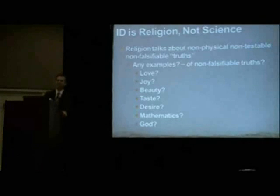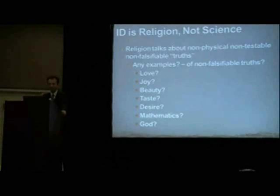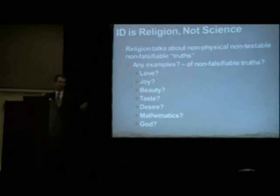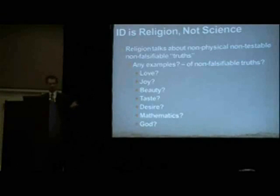How about: intelligent design is a religion, therefore it's not a science? Religion talks about non-physical, non-testable, non-falsifiable truths, according to most educated people. Are there examples of non-falsifiable truths? There are some that are potentially non-falsifiable because they're in the eye of the beholder — for example, beauty. Beauty is in the eye of the beholder, so it's kind of subjective. Same thing with joy — what makes somebody happy might not make another person happy. Or desire.